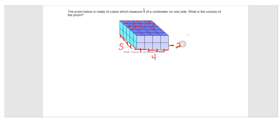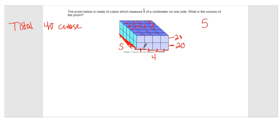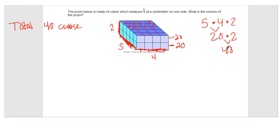And since you're going up another layer high, you know that there's going to be 20 cubes on this layer because it's a perfect rectangular prism. So that's going to be a total of 40 cubes with an edge length of one fourth. You can take the number of cubes along the length (five) times the width (four), which gives you 20, then multiply by two because it goes up two layers high, giving you forty.